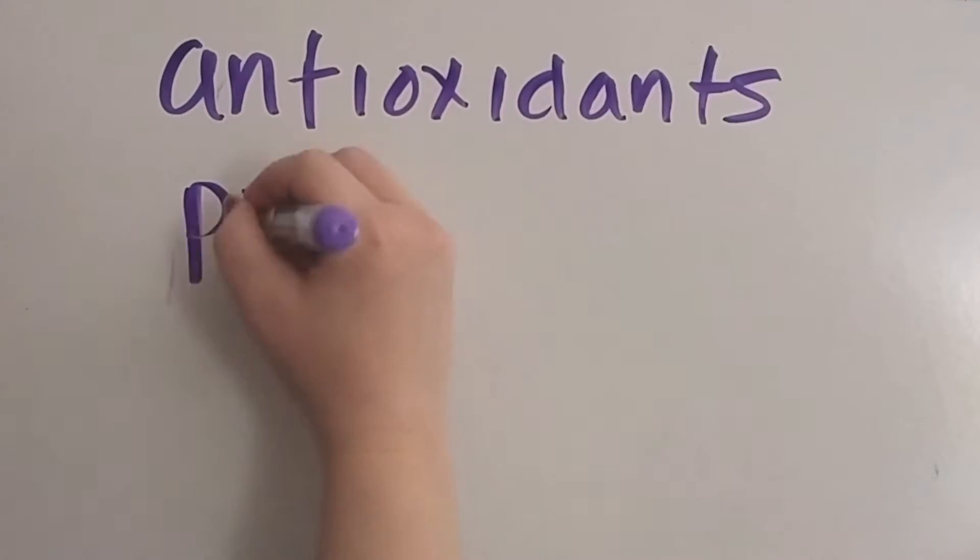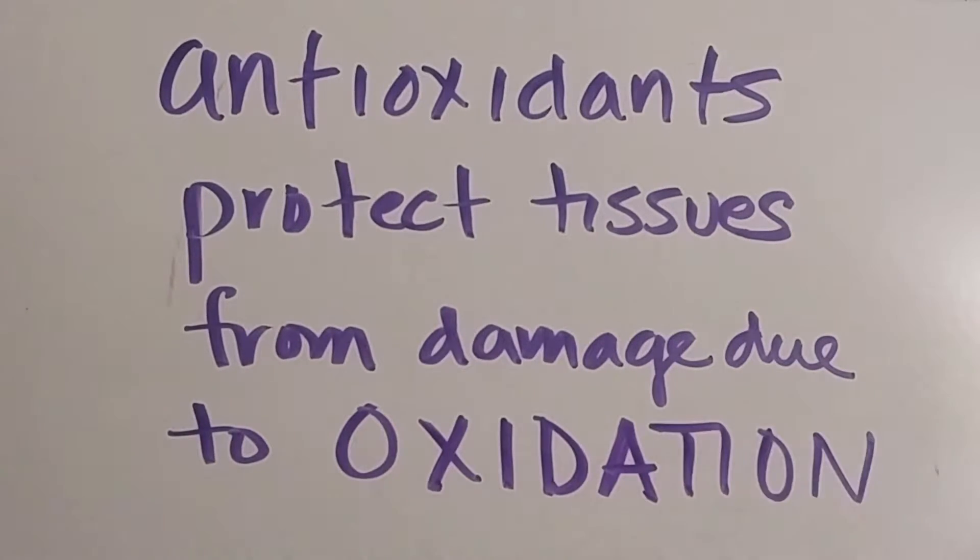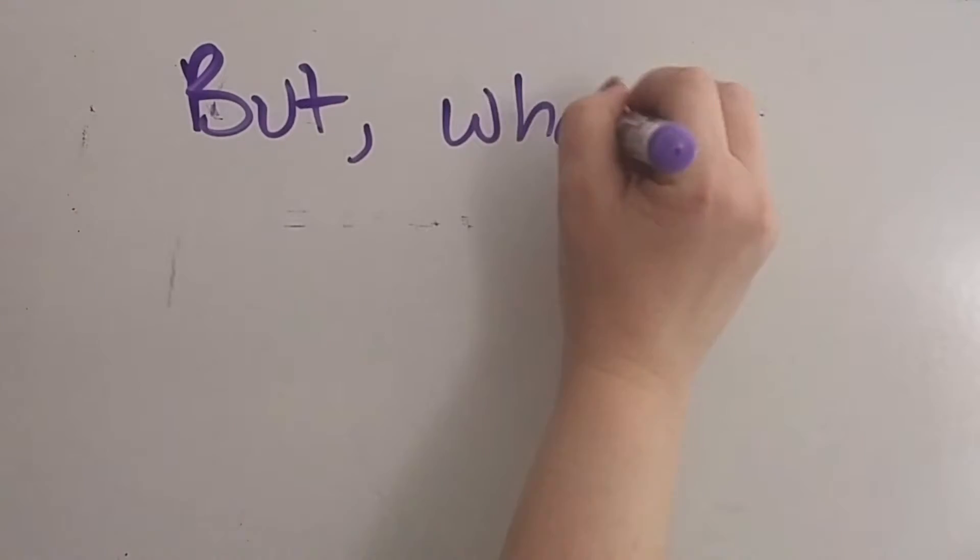First, a little chemistry lesson. Antioxidants are a special kind of chemical that protect tissues of the body from damage by oxidation. But what is oxidation?